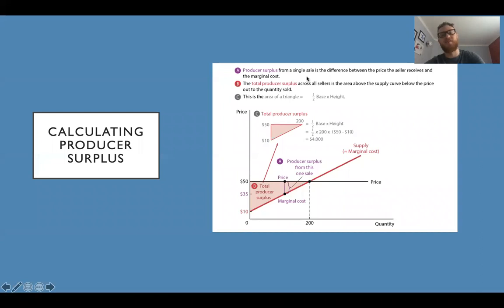Over here calculating producer surplus. Producer surplus from a single sale is the difference between the price the seller receives and the marginal cost. That's A right here, the purple. This is another example from the textbook. The total producer surplus across all sellers is the area above the supply curve and below the price out to the quantity sold. So we have B, the big red area, that's our total producer surplus. This is another triangle. So again, we're just going to do half times base times height and they do it again here for our area B. They do 50 times 50 minus 10 times 200. You get 4,000.